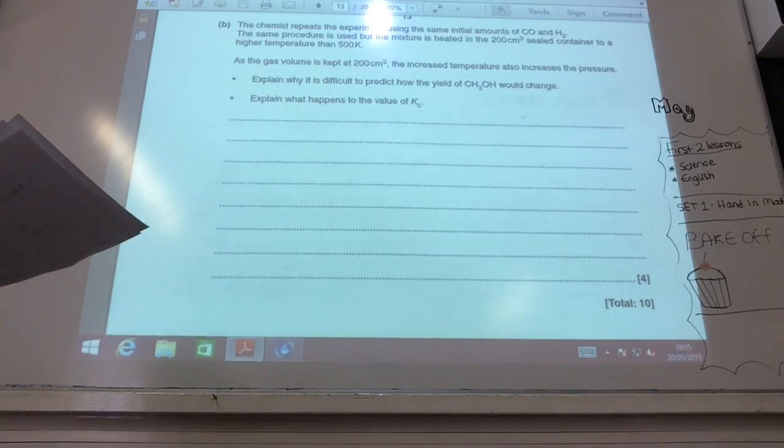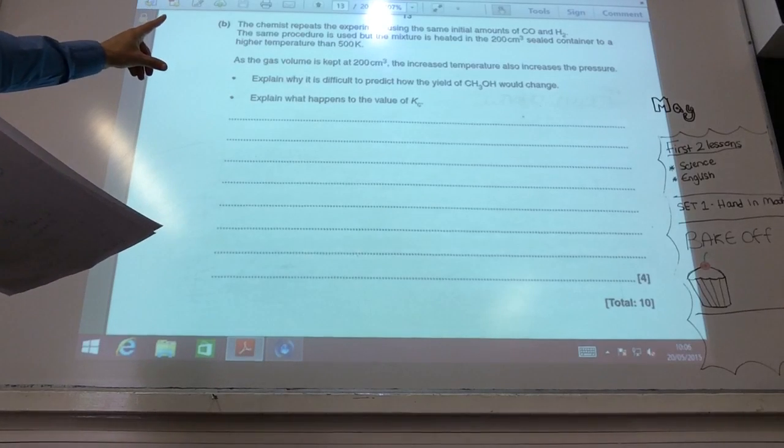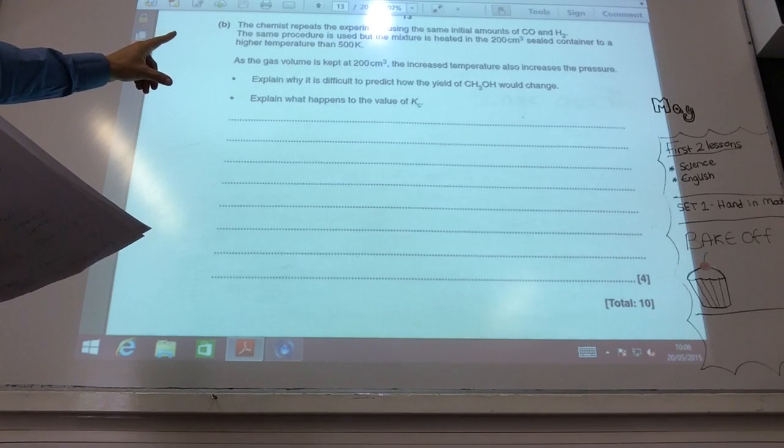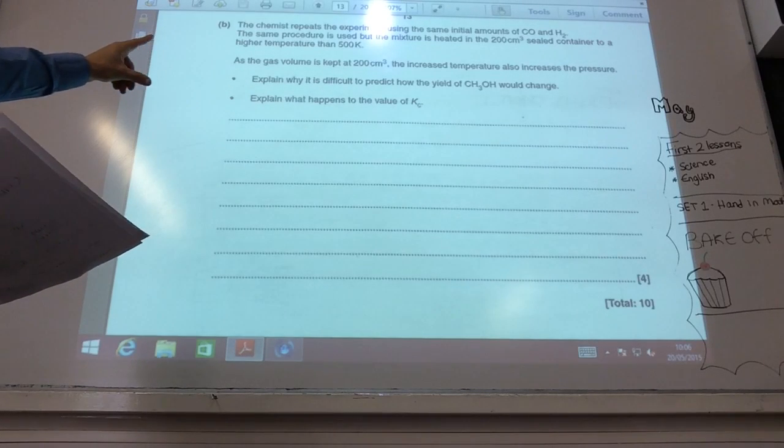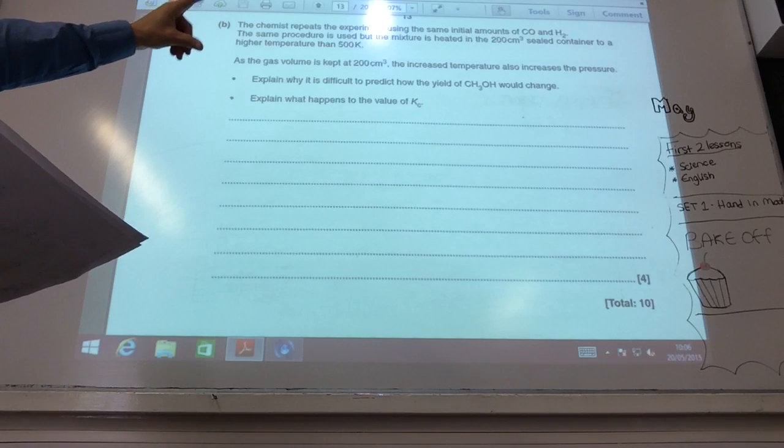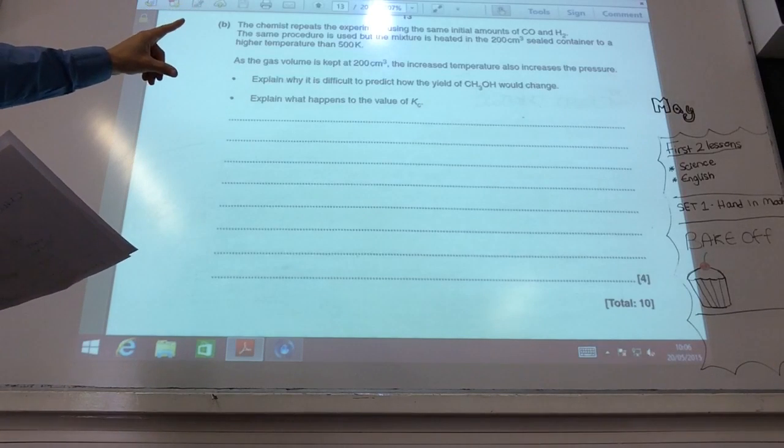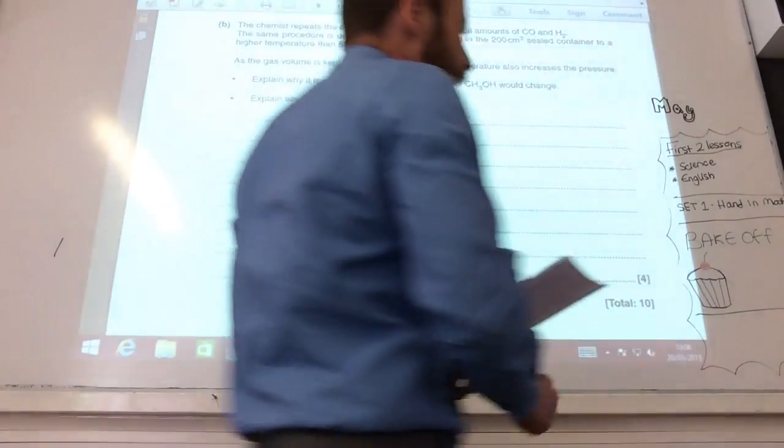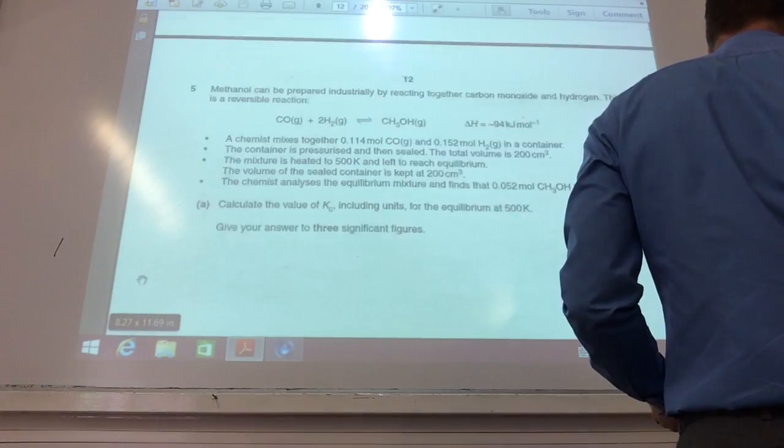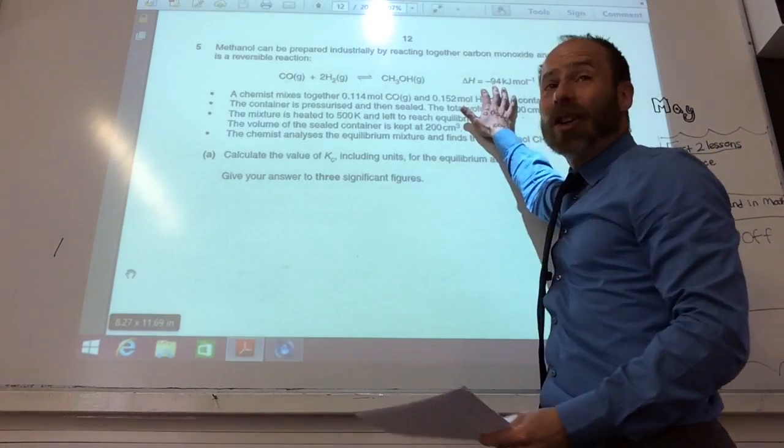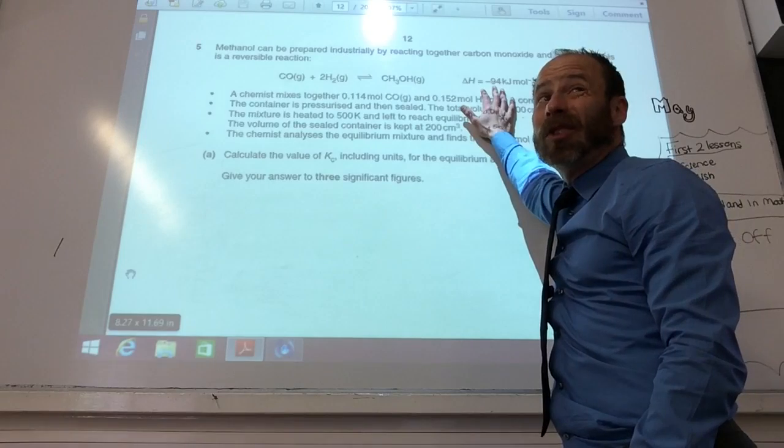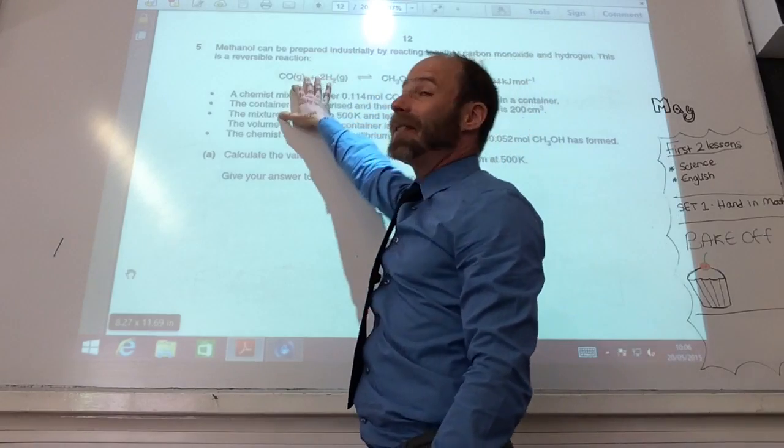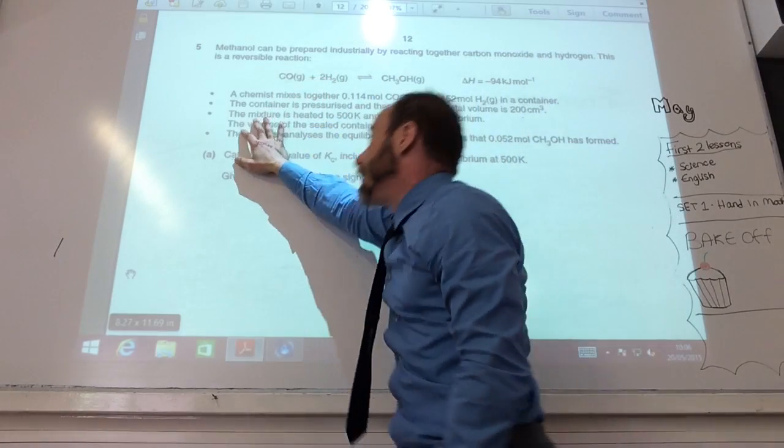Okay, so part B. The chemist repeats the experiment, but the mixture is heated to a higher temperature. The gas volume is kept the same, and therefore we are also increasing the pressure. So, if we have a look at the reaction at the top, it's an exothermic reaction, so which way will the equilibrium shift? So we can say it's an exothermic reaction, the equilibrium will shift to the left-hand side, and Kc will decrease. Brilliant.